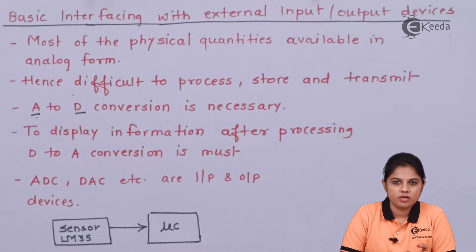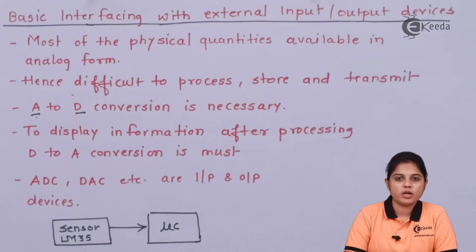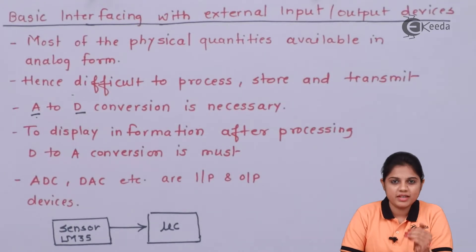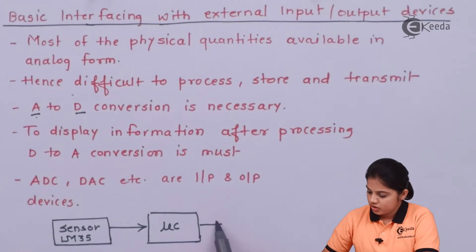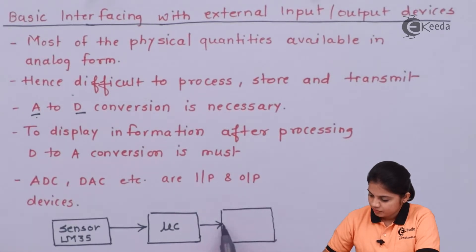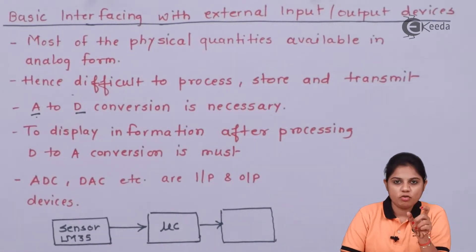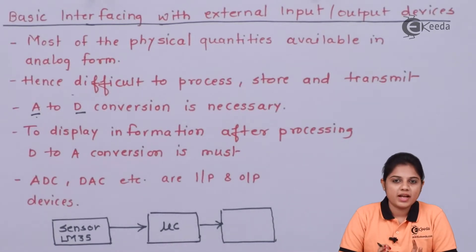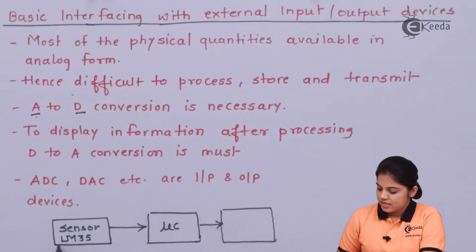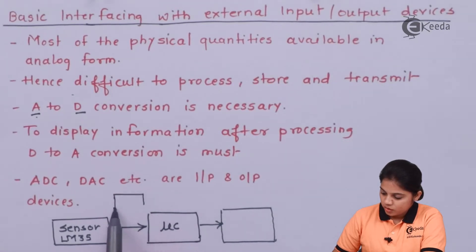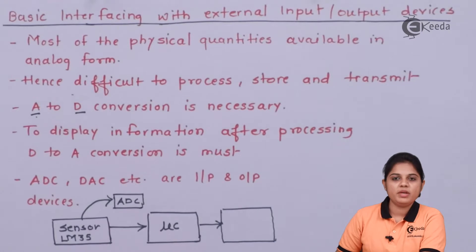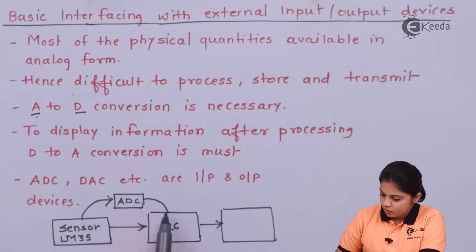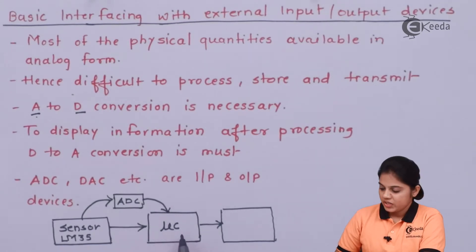Suppose LM35 is measuring the temperature of a particular room. If that temperature is above the predefined value, the microcontroller program must bring it down to the predefined value. If it is lesser, the room temperature has to be increased to the predefined level. Since the sensor output is in analog form and the microcontroller cannot understand analog values, you must connect an ADC — analog to digital converter — between the sensor and the microcontroller.